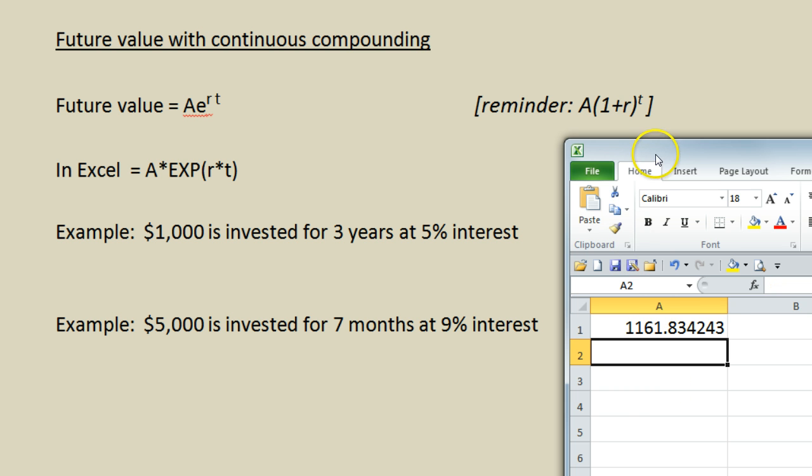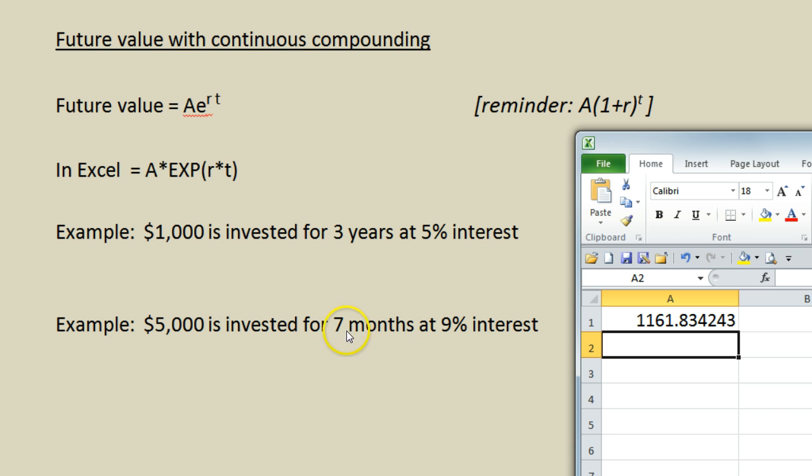We have another example here to make sure we know what the best thing to do is when we're talking about fractions of years. So in this case we have $5,000 invested for seven months at nine percent interest. Same equation. We take the amount $5,000 we multiply by e raised to the which is exp open parentheses. The interest rate is nine percent point oh nine times time. Time is in years here and the best thing to do is to say that it is seven divided by 12 years.